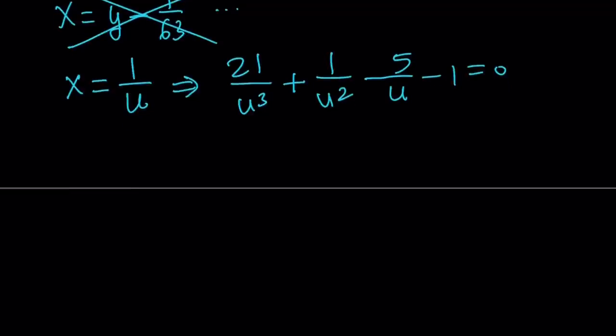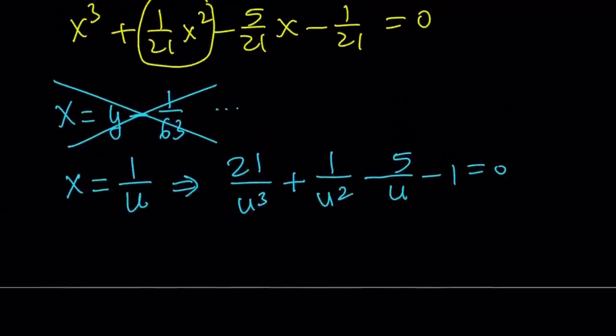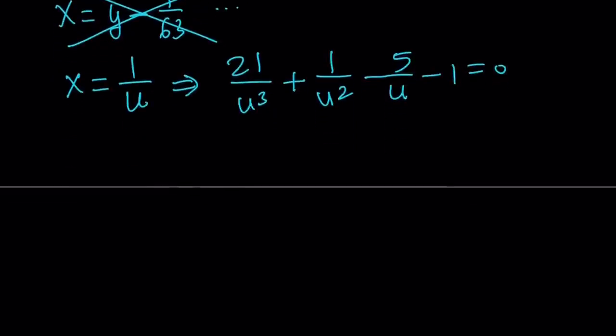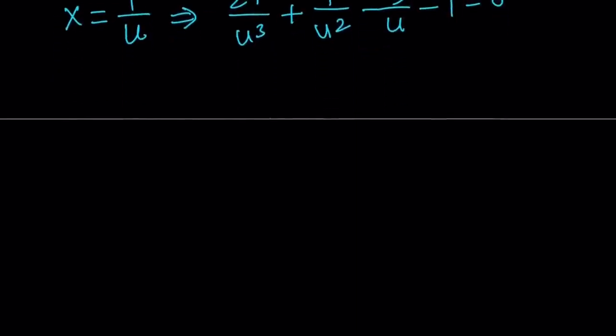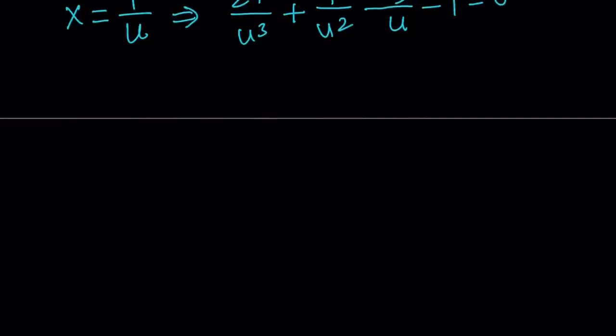What can I do? We can make a common denominator or just multiply both sides by u cubed. I think you should know that u does not equal 0. So we can multiply both sides by u cubed. That's going to give us 21 plus u minus 5u squared minus u cubed.